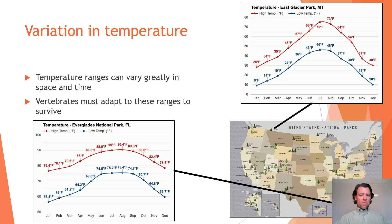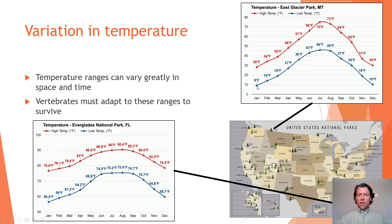So, variation in temperature. Temperatures can vary greatly in both space and time, and vertebrates have to adapt to these ranges in order to survive. In Glacier National Park, we have months of the year on the x-axis and temperatures on the y-axis. The temperatures range quite a bit across the year: a low of 9°F in January, up to about 46-47°F in the summer for the low, with high summer and winter temperatures also quite variable.